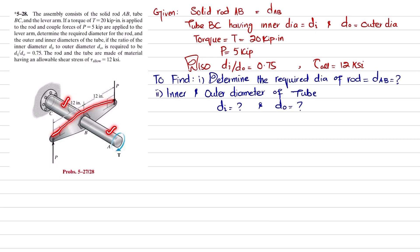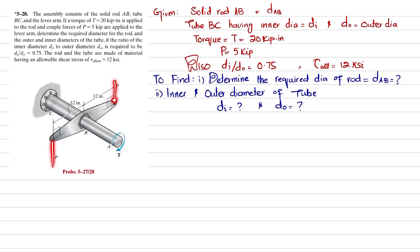So this is rod AB, this is tube BC, and this is the lever arm. A torque T of 20 kip·inches is applied to this rod, and couple forces P are applied to this lever arm. We need to find the diameter of rod AB and the inner and outer diameter of tube BC. Let's start with the solution.